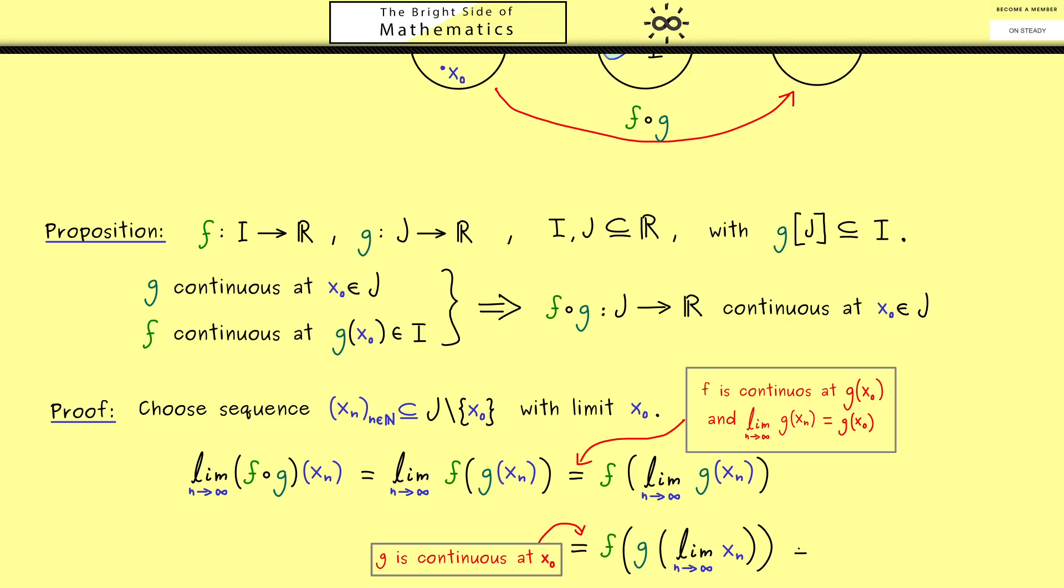Hence, what you see here in the end is the value of the function f after g at the point x₀ is the same as the limit. And this is by definition continuity at x₀.